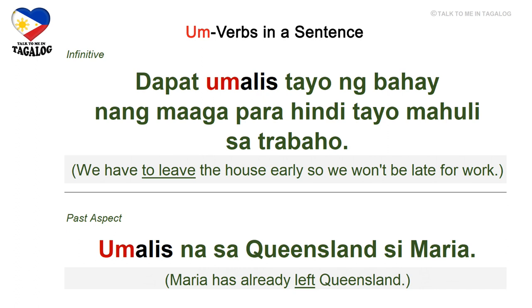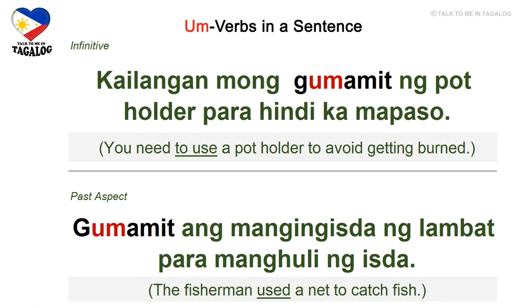Past aspect: umalis na sa Queensland si Maria. Umalis means left, and na is already — Maria has already left Queensland.